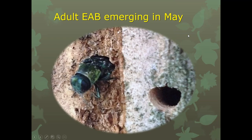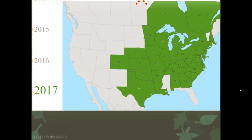In many of your neighborhoods, EAB emerges about the time that black locusts are flowering — that's a good phenological marker to remind yourself that they're coming out.